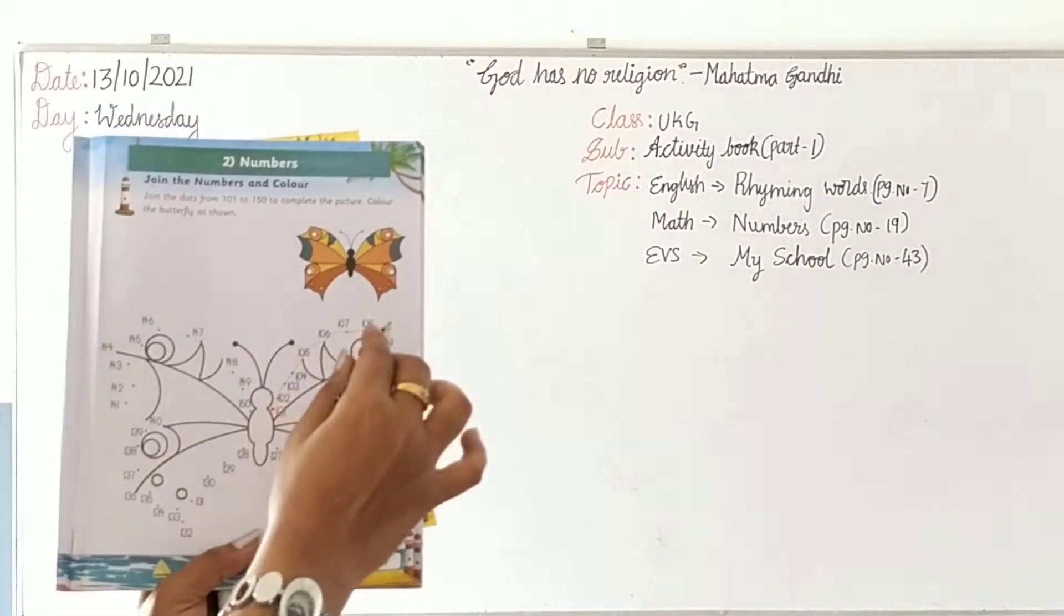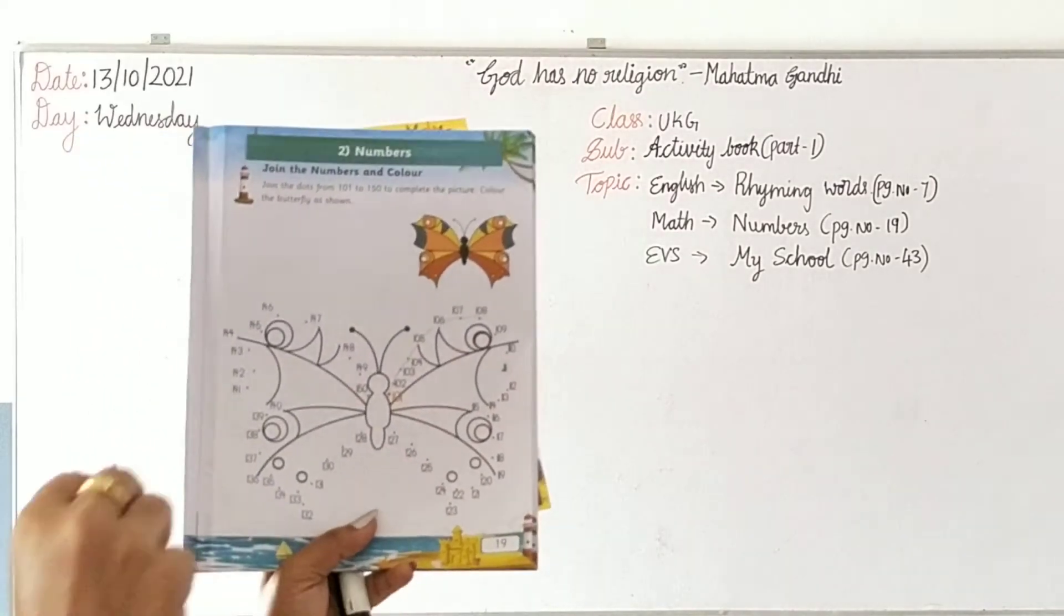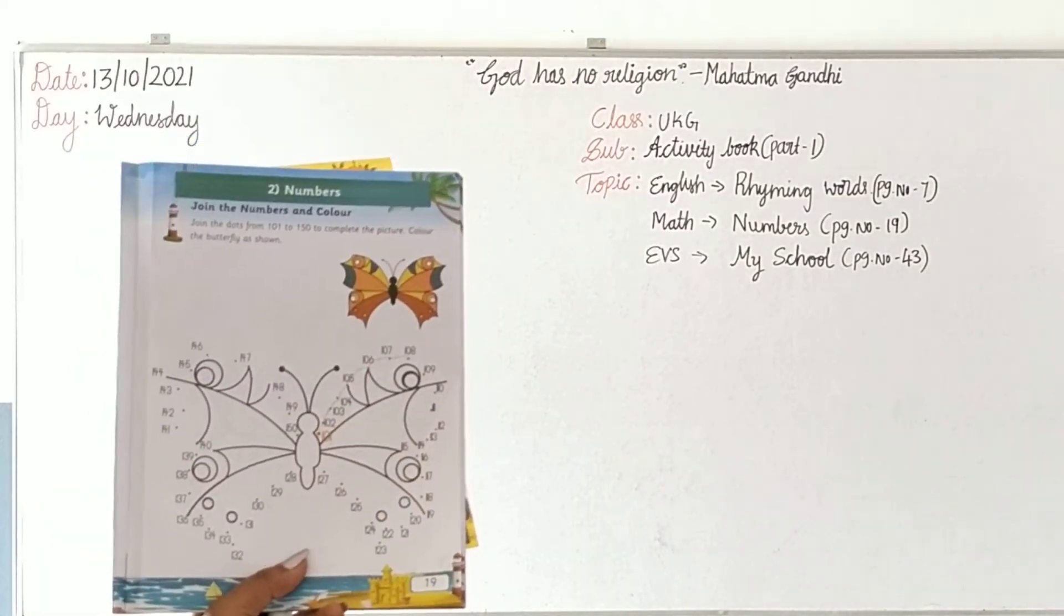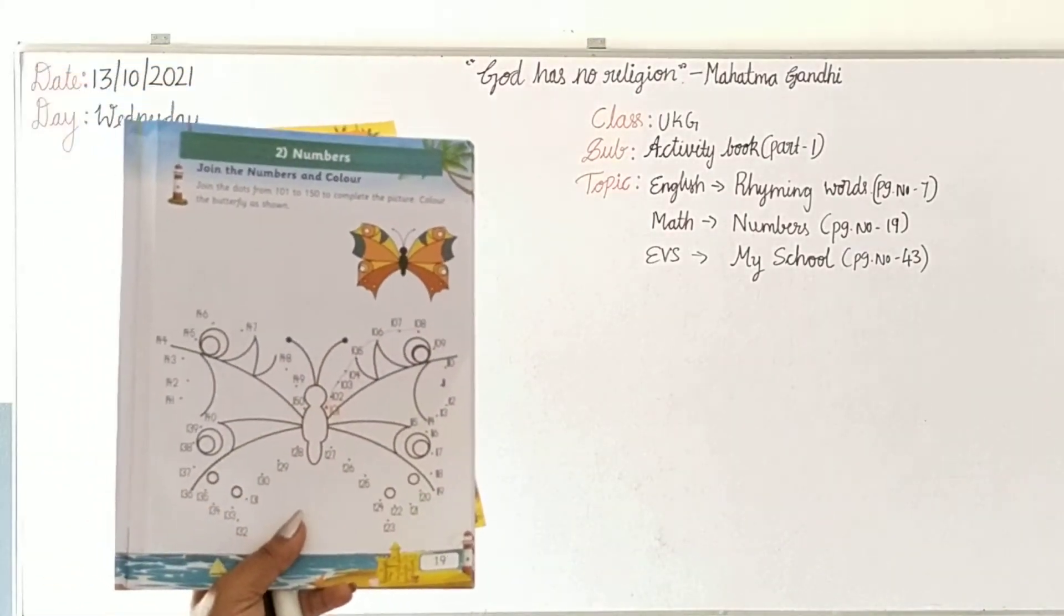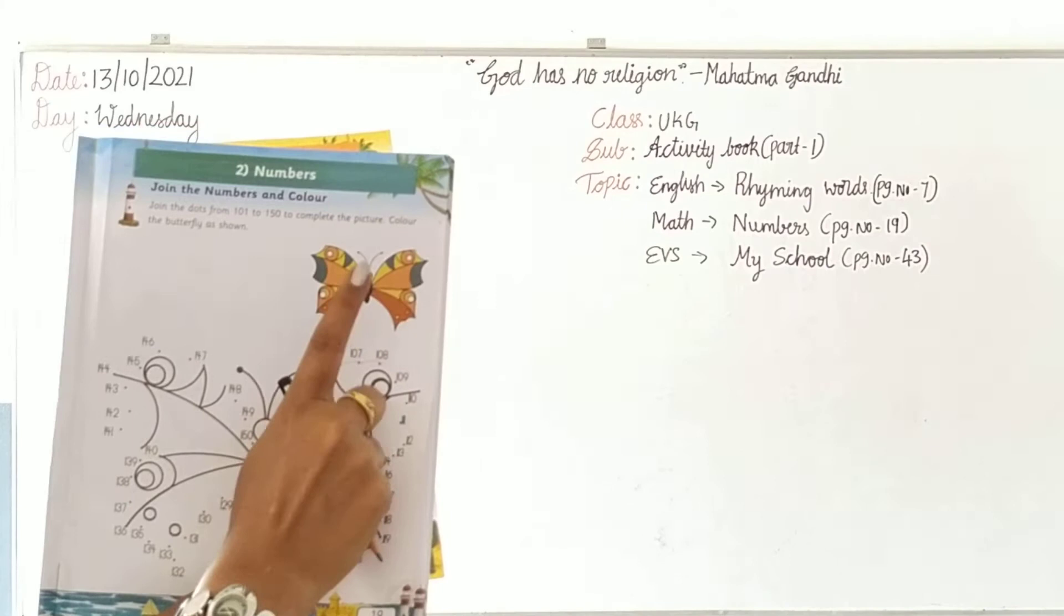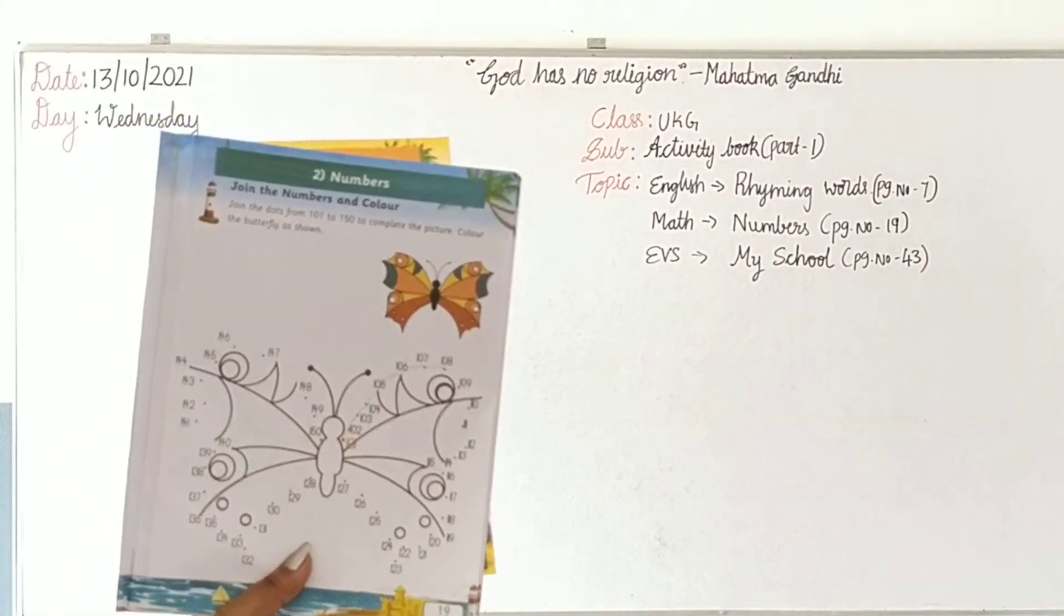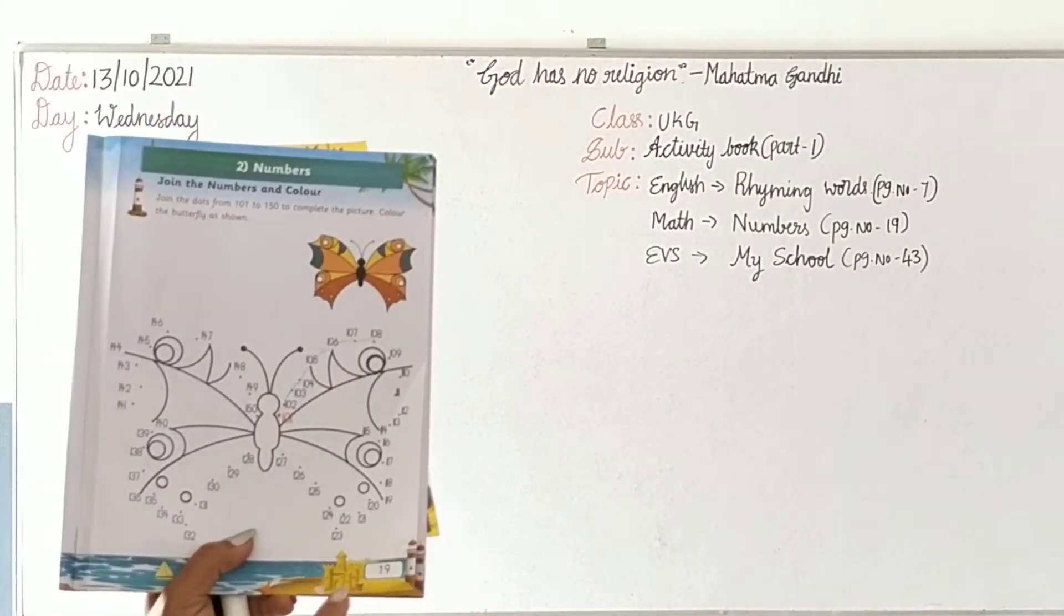In this way you have to join the butterfly till 150. The numbers have been given, the dots have been given. Once you complete the drawing, you just colour the butterfly as shown in the book. Use the same colours and colour with the respective colours. Page number nineteen in your activity part one book.